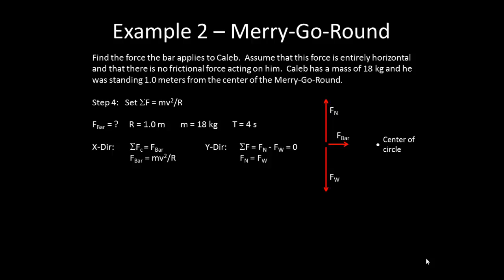Our step 4 is to set the net force equal to mv² over r. So I get that the force of the bar should be equal to mv² over r. Now, I want to solve and substitute as necessary. And looking at this equation, I'm trying to solve for the force of the bar. I know the mass and I know the radius, but I currently don't know the speed at which Caleb was moving. So if we go back to thinking about our definition of speed, it is distance over time. And my distance, we consider the circumference of the circle, 2πr, over the period, the time it takes to complete one revolution. So 2π times 1 meter over the 4 seconds gives us 1.571 meters per second.